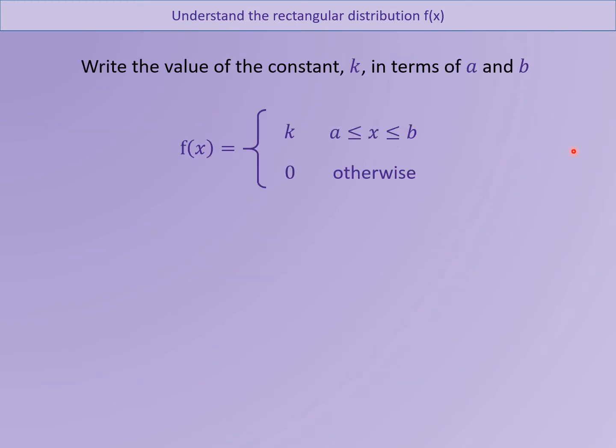What I'd like you to do is see if you can write down the constant k in terms of a and b. So for a general rule for a rectangular distribution. So pause it. Have a think yourselves what k value is going to be in terms of a and b.